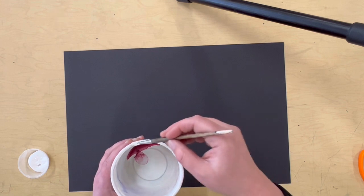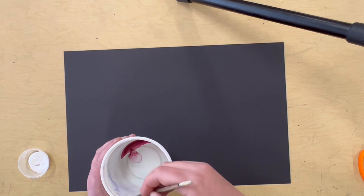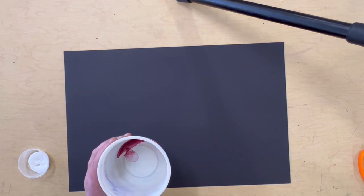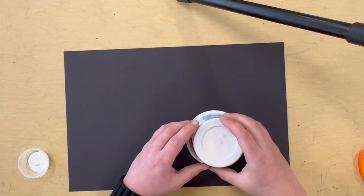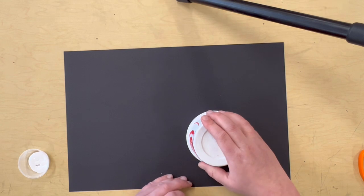And I'm gonna use white paint and I'm going to paint around the circle like here in the sour cream container that I'm gonna use. And then I'm gonna turn it over and press it down onto my black paper so I get a white circle printed.